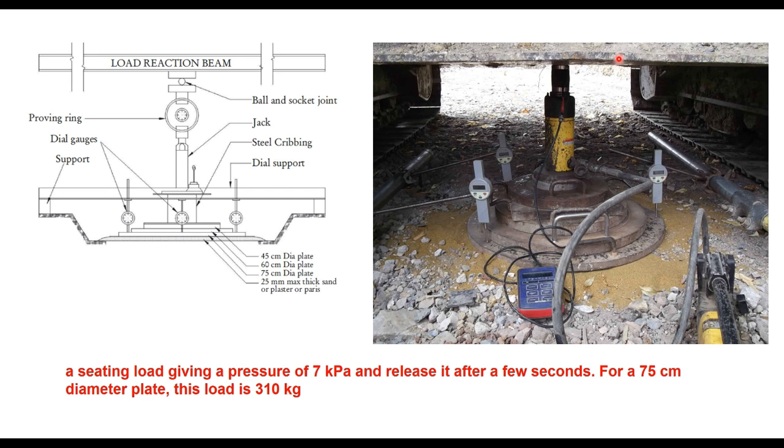We need a loading arrangement. Load is applied through a hydraulic jack which works against a reaction frame. The loading attachment should have a capacity of at least 150 kilo newton. Reaction to load can be obtained by attaching this device to a tractor, truck, or truss. A load cell is used to measure the load.